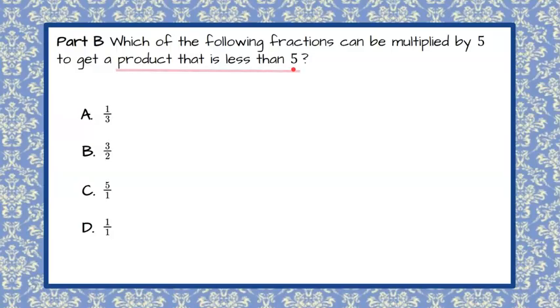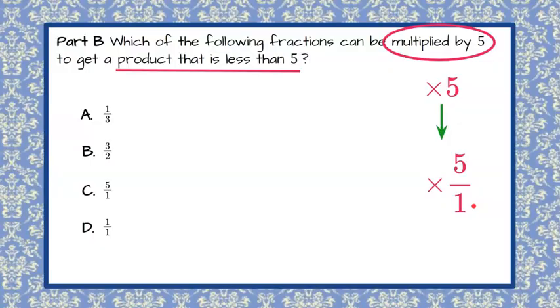Welcome back. So we're looking for a product, which means we're multiplying that is less than 5, when we multiply by 5. When we multiply a fraction by a whole number, we want to consider that we're multiplying by 5 over 1. So we're going to multiply each of these by 5 over 1, or 5. We're going to multiply the numerators. 1 times 5 is 5. 3 times 1 is 3. We get 5 thirds, and that, as a mixed number, 3 goes into 5 once with 2 left over, so 1 and 2 thirds. So is that product less than 5? It is.